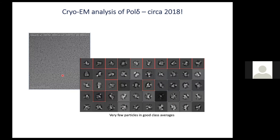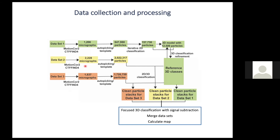A typical micrograph for Pol delta holoenzyme is shown here. The particles are visible but too small to identify consistent shapes. We were quickly able to do some 2D classifications, and promising classes show features consistent with what we know about Pol delta — for example, a tube-like density emerging from the center of the molecule that we attribute to DNA binding. We also see high-resolution features such as secondary structures in some of these class averages.